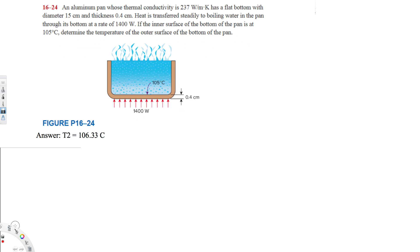Let's do this problem. The question involves an aluminum pan whose thermal conductivity is 237 watts per meter Kelvin. It has a flat bottom with a diameter of 15 centimeters and thickness of 0.4 centimeters. Heat is transferred steadily to boiling water through the bottom at a rate of 1400 watts. The heat is going from outside to inside.